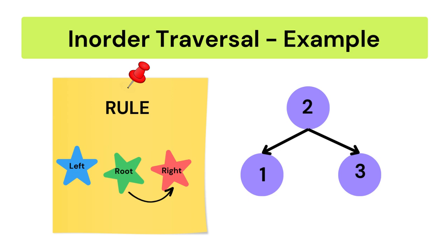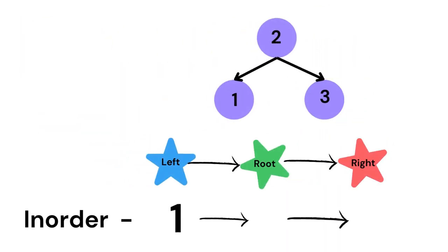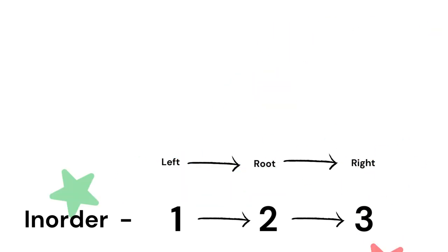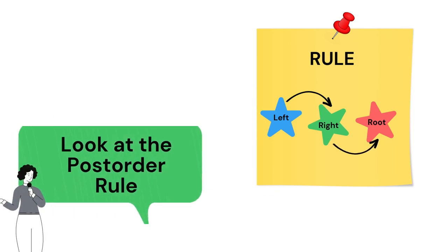Let us consider this BST. Here, left node 1, then root node 2, then 3. So the order of traversal will be 1, 2, 3. Let us look at the post-order rule.